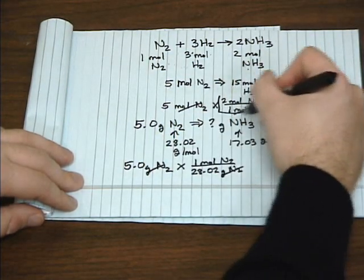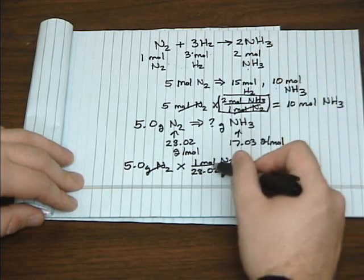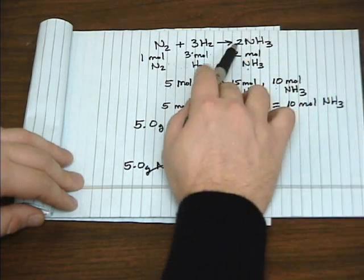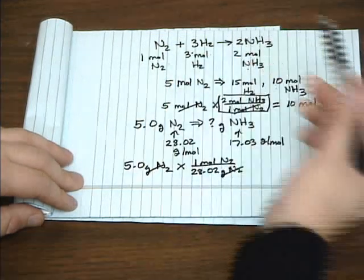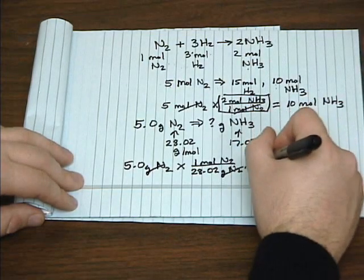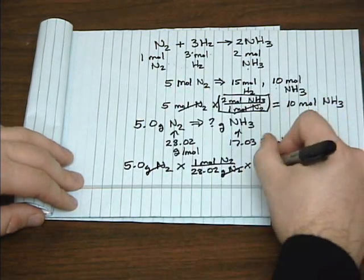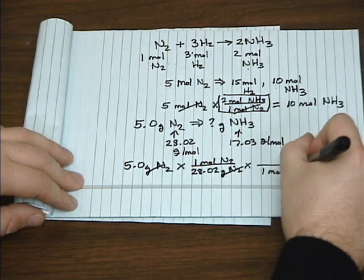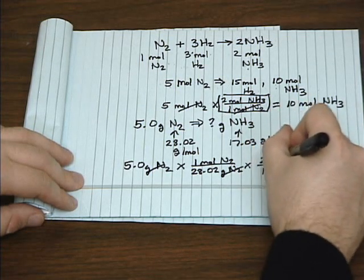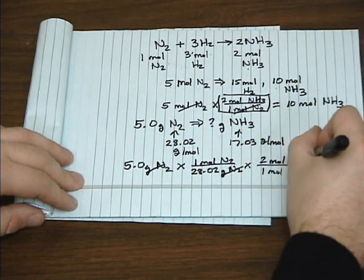And just as we did before, to go between moles of one substance to moles of another, we use the coefficients from our balanced equation. So again, for every one mole of N2, we'll get two moles of NH3.